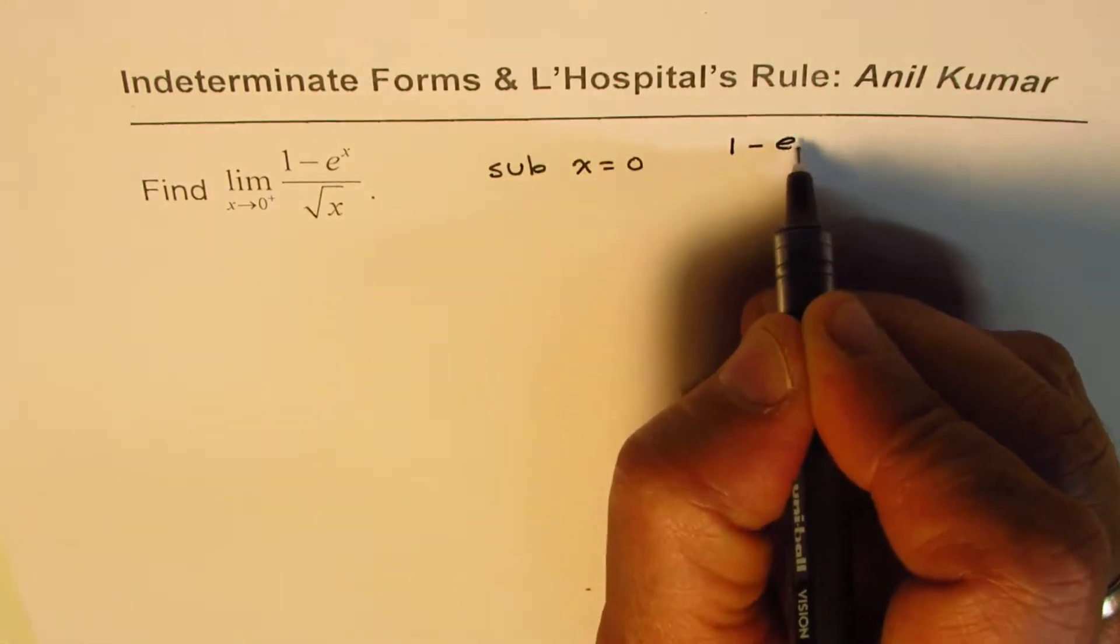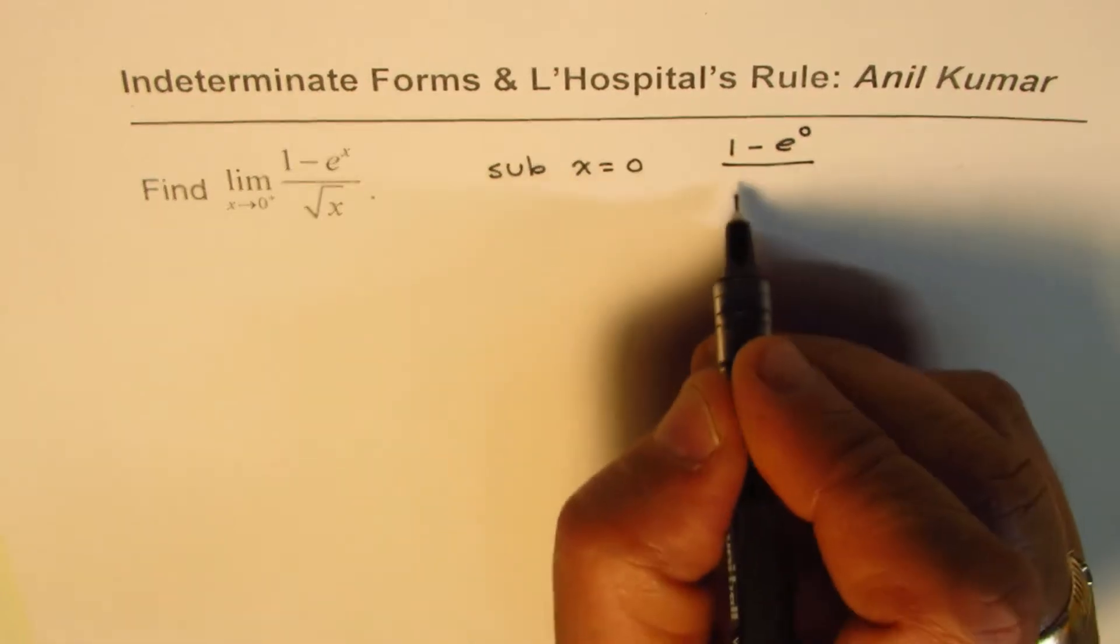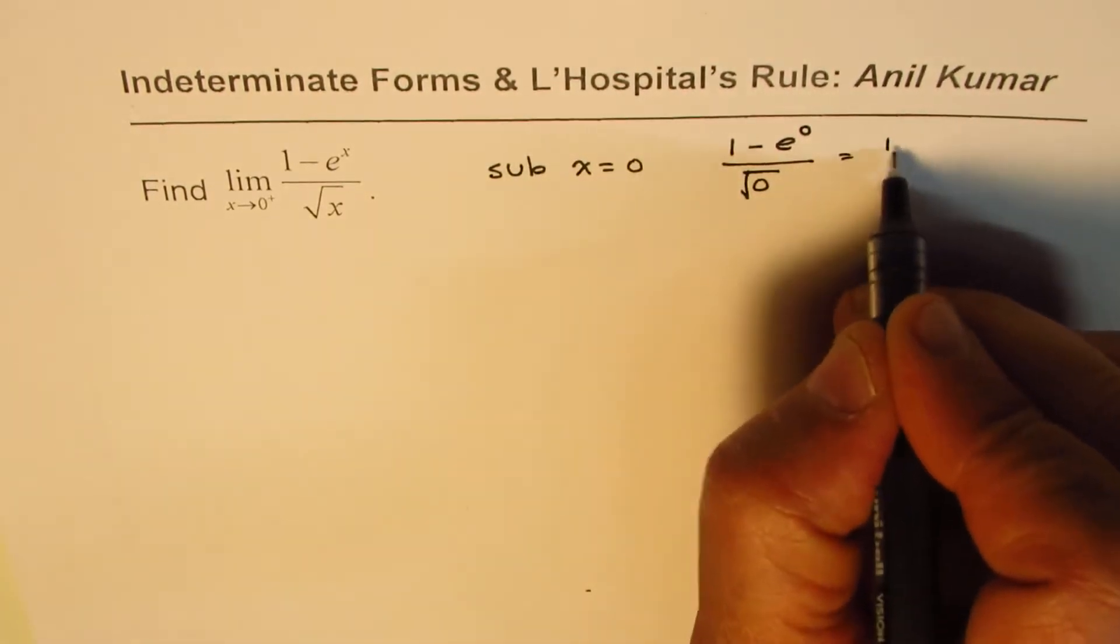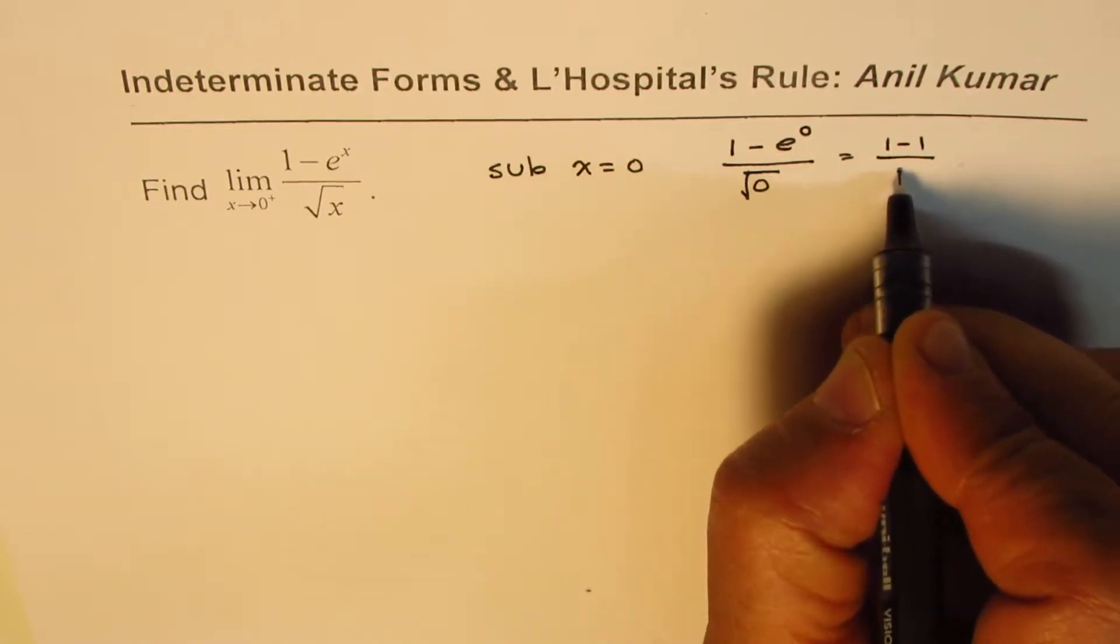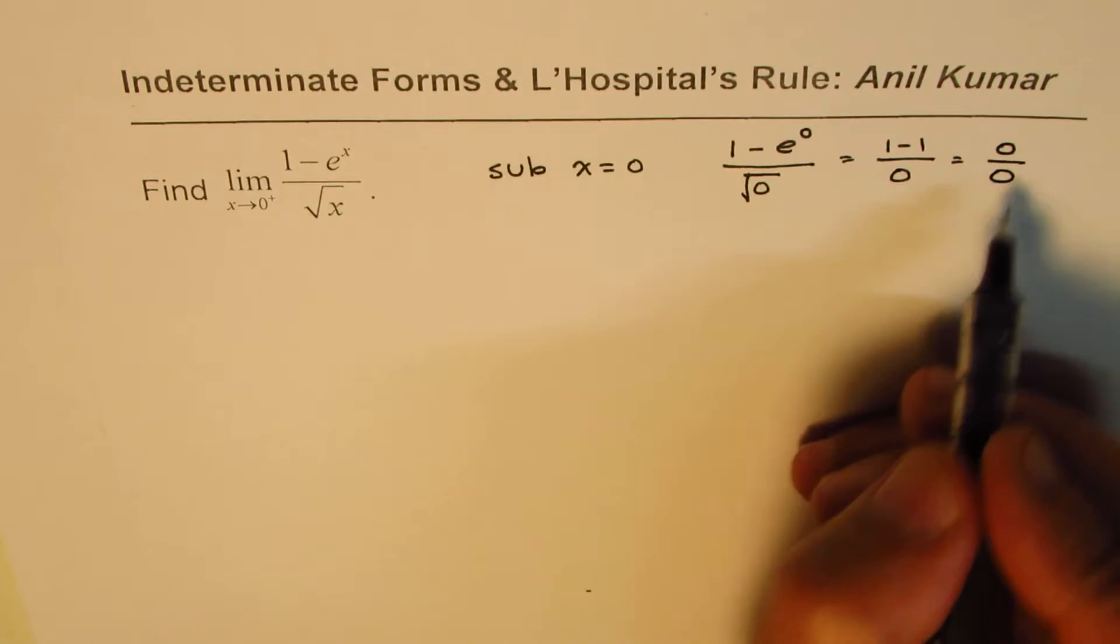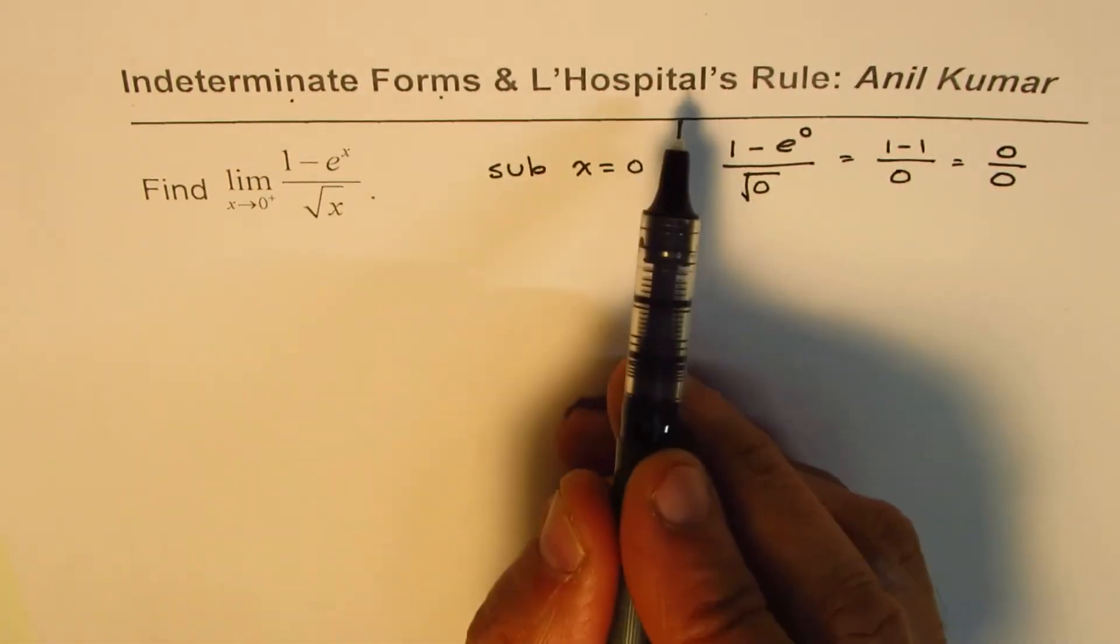get here? 1 minus e^0 divided by square root of 0, and that is 1 minus 1 over 0, or we get 0 over 0. So 0/0 is an indeterminate form, so